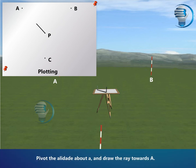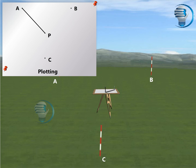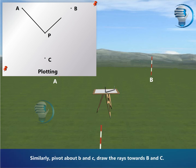Pivot the alidade about A and draw the ray towards A. Similarly, pivot about B and C and draw the rays towards B and C.